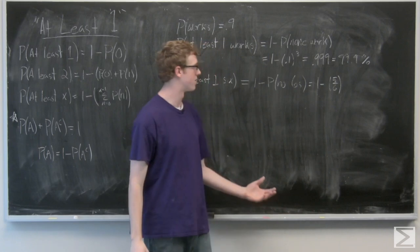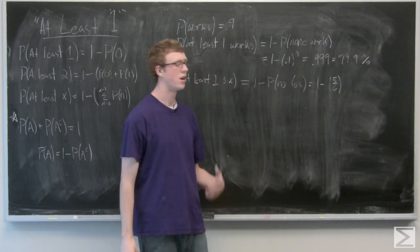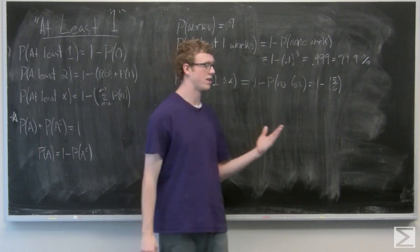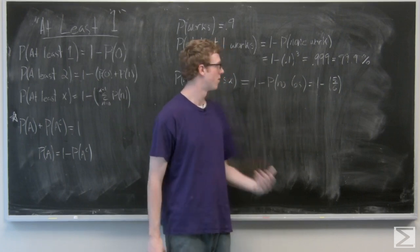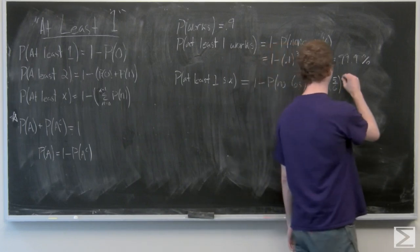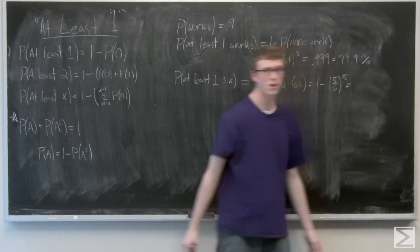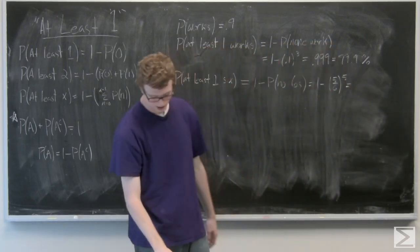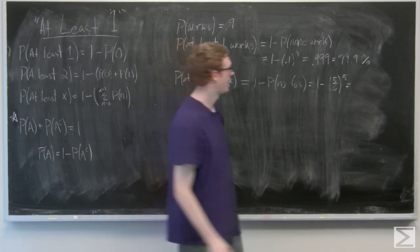And we said that there's five dice rolls. So probability that dice roll one and two and three and four don't get a six is just going to be five-sixths to the fifth. Go ahead and plug that into your calculator and you're going to get 0.598.